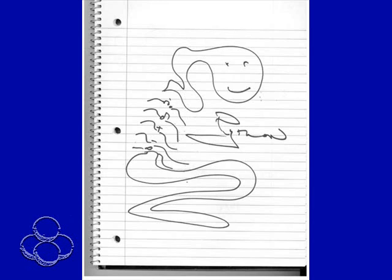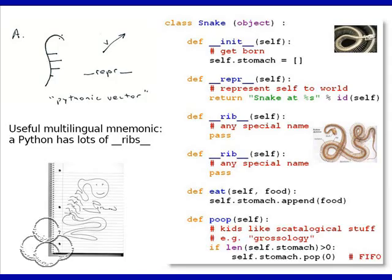They think of Python as a snake, obviously — they've forgotten about Monty Python. Look how many ribs snakes have; there's an abundance of ribs. Special names look like ribs, so I talk about the rib syntax. They like that. The fact that we're dealing with a creature — it is a snake, it does get born, it has a stomach — and when it eats, it adds to the stomach.